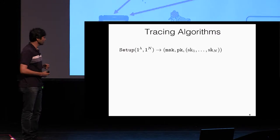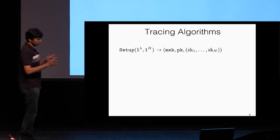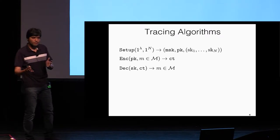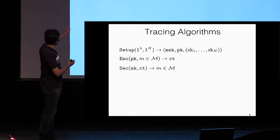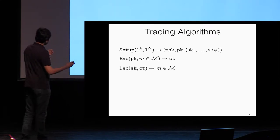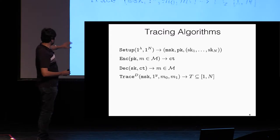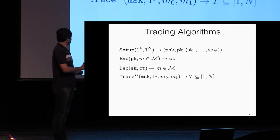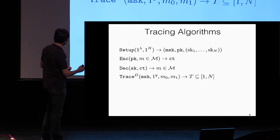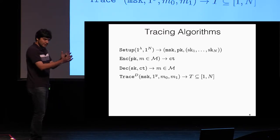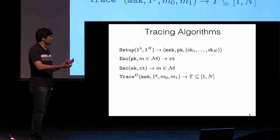Let me formalize the problem of traitor tracing. In traitor tracing systems we have four algorithms. The first three correspond to regular public key encryption algorithms, except the setup algorithm outputs all n user keys at once. The special algorithm is the tracing algorithm. It takes as input the master secret key, some parameter Y, and two messages M0 and M1. Additionally, this algorithm gets oracle access to some decoding device T, and it outputs a set T — the set of traitors that the tracing algorithm points to.